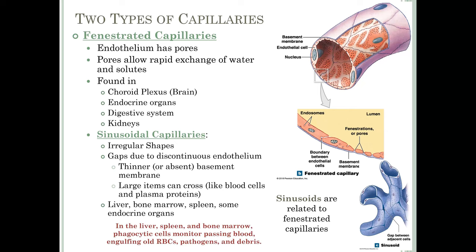In the liver, spleen, and bone marrow, phagocytic cells like macrophages sit in these sinusoids and monitor passing blood. When they see an old or damaged red blood cell, they engulf and recycle it, and they also remove pathogens and debris from blood. We discussed much of this in Chapter 19 when talking about red blood cell turnover — now you have the rest of the story: this takes place in the liver, spleen, and bone marrow where you have these sinusoidal capillaries.